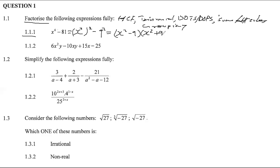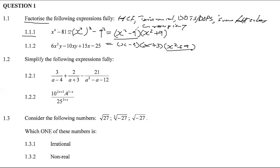...x squared plus 9. This simplifies further — we can still apply difference of two squares because 9 is a perfect square, giving x plus 3 and x minus 3. Then we have x squared plus 9, which we can't factorize further for any real solution, so we leave it at that. Note that 9 is 3 squared.